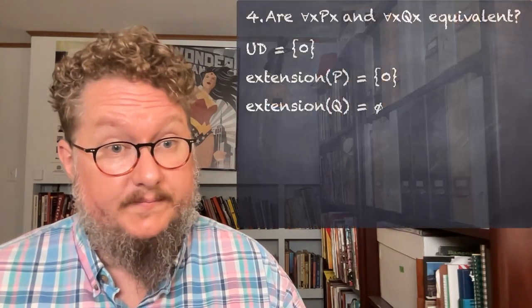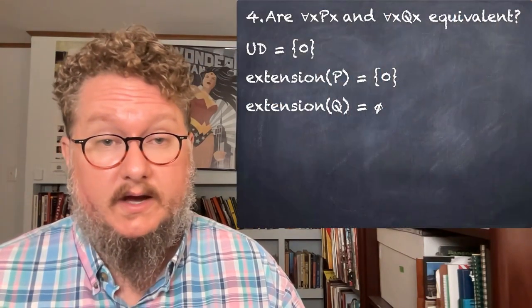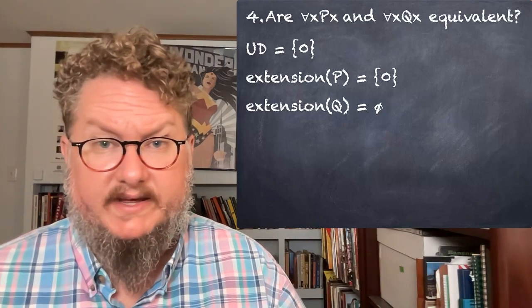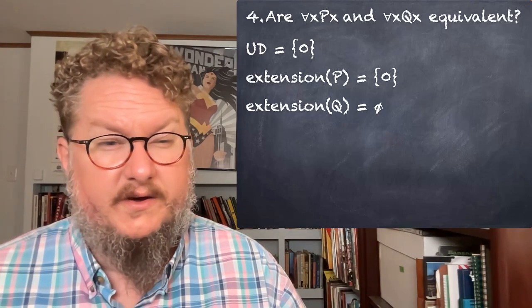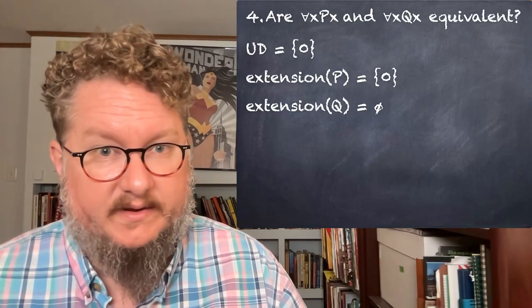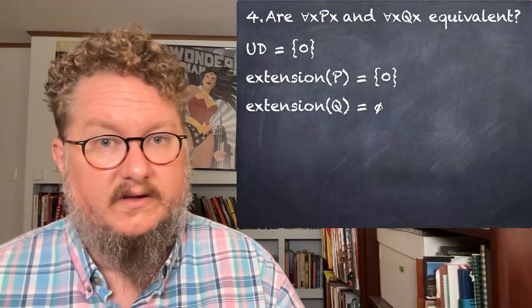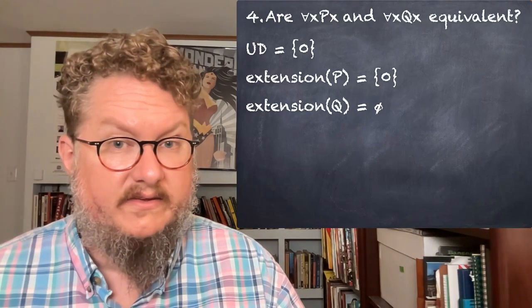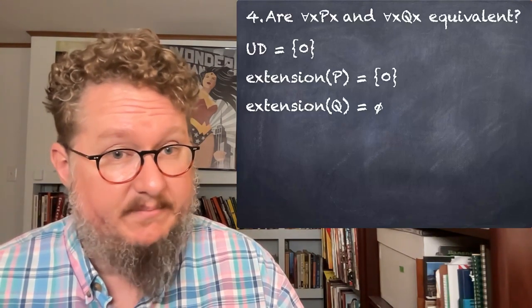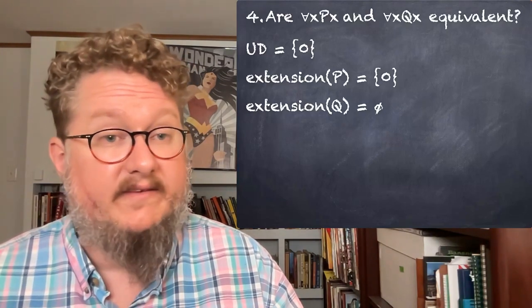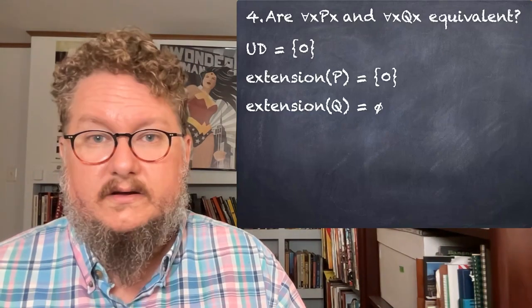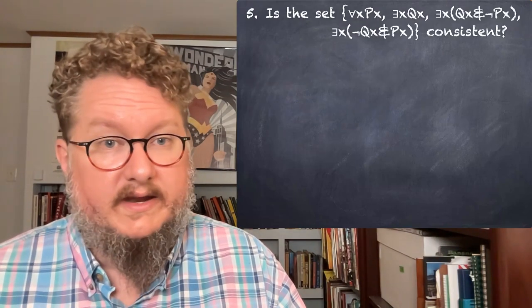Number four: we want to know whether these two sentences are logically equivalent. Although they may look equivalent because of their similar form, we've just substituted different predicates, and predicates can mean different things. They don't have to be equivalent, and this simple model can show that.